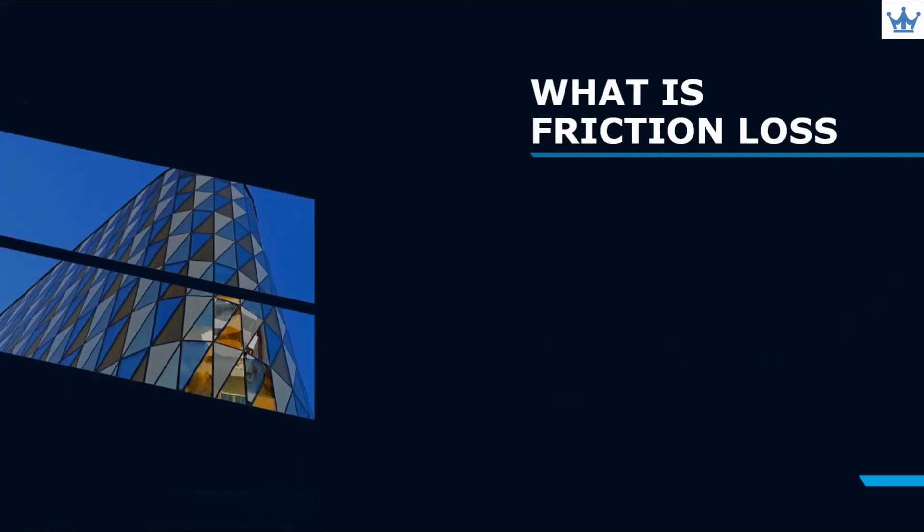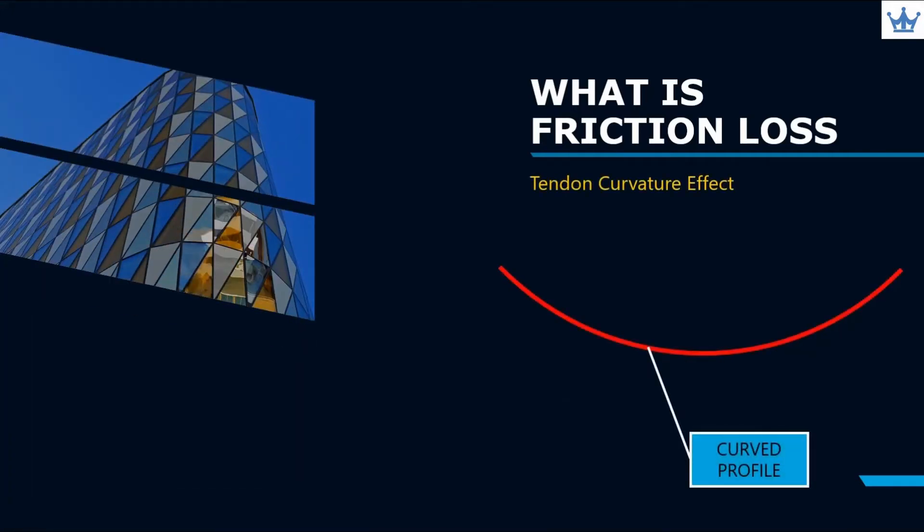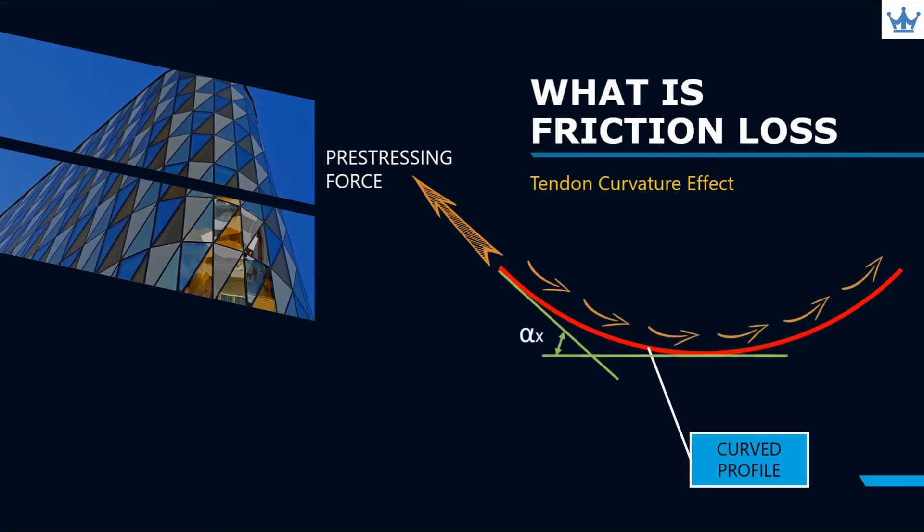Once the strand is stressed, the force travels along the tendon following the shape of the tendon. Since the tendon is curved, friction occurs due to angular change of profile. Alpha X shown here is the angular change from one point to another point.